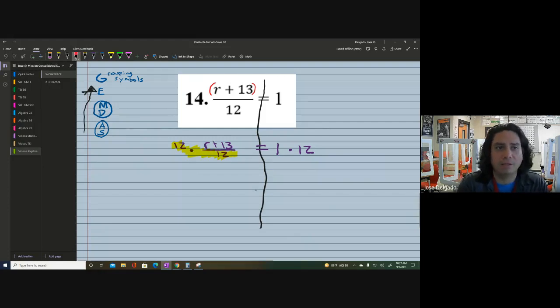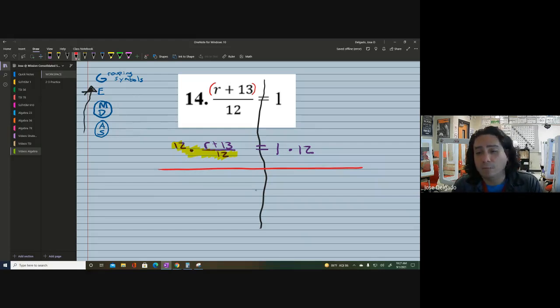The opposite of dividing by 12 would be multiplying by 12. But whatever we do on one side, we got to do to the other side. Notice in this problem, once we multiply by 12, these 12s will cancel each other out. They're gone from this because we don't need them anymore.